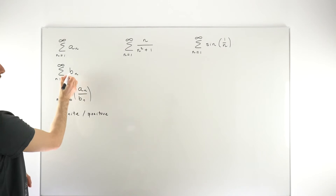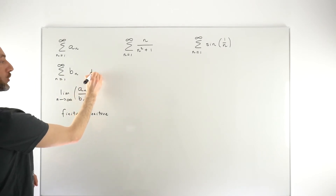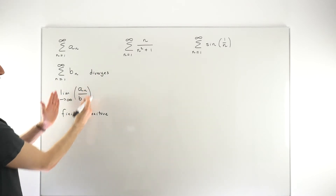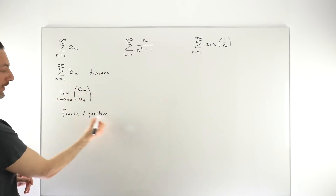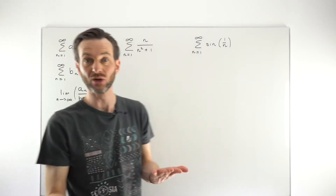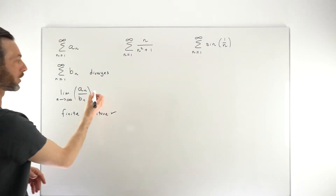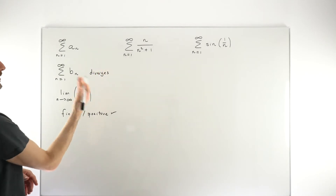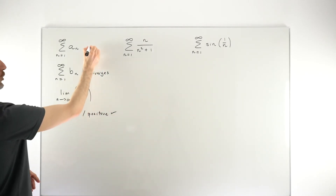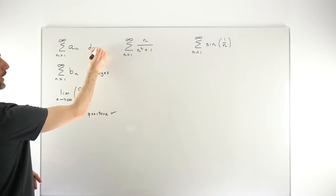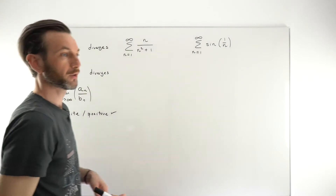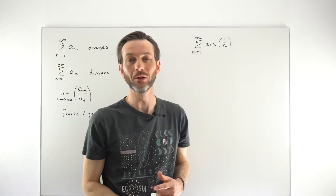If that criteria is met, then we can say the two series behave in the same way. For example, if our b_n series diverges and we run the limit comparison test and get this result, then the criteria has been met and both series have the same behavior. If the known series diverges, then the unknown series will also diverge. That's how the test works - a really neat little test.